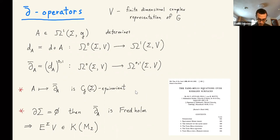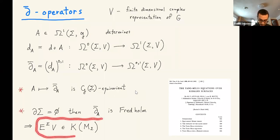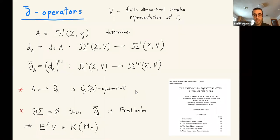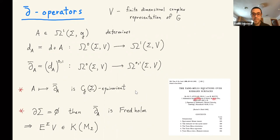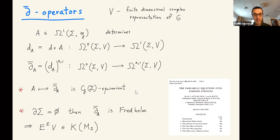Now let's talk about the D-bar operator associated to a connection. If you fix a finite-dimensional complex representation V of the group — for G = SU(2) you can take V = C^2 — then a connection 1-form gives you a connection operator: exterior derivative plus the connection 1-form. I take the (0,1) component of this operator, projecting onto the (0,1) part, and that gives the D-bar operator D_A-bar. This family is equivariant for the gauge group.